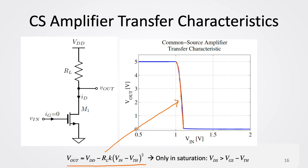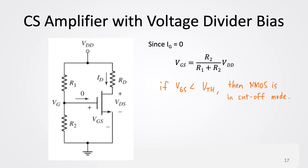This is the plot of VOUT versus VIN characteristics of the common source amplifier. When VIN is below the threshold voltage — in this case 1 volt — the MOSFET is in cutoff mode. Then it goes into saturation, and finally into the linear region. Regarding the biasing, we need a voltage source for VDD and also a separate voltage source for VIN.